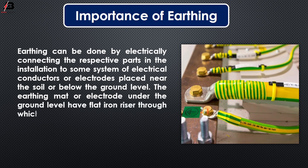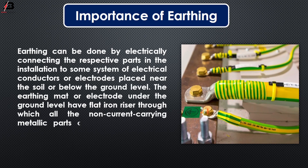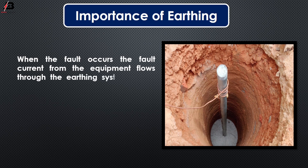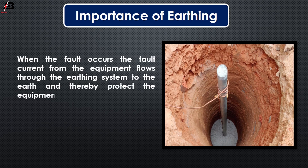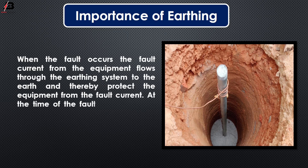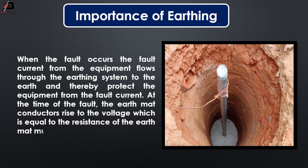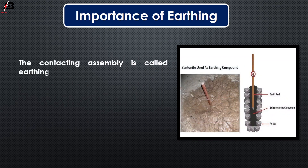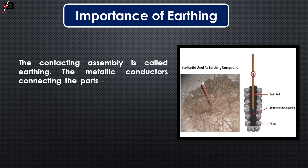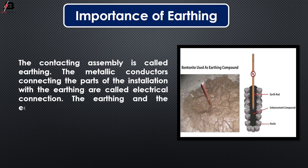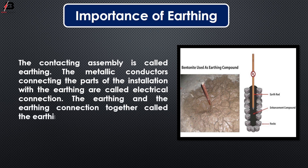Flat iron rays through which all the non-current carrying metallic parts of the equipment are connected. When a fault occurs, the fault current from the equipment flows through the earthing system to the earth, thereby protecting the equipment from the fault current. At the time of fault, the earth mat conductor rises to a voltage equal to the resistance of the earth mat multiplied by the grounding fault current. The contacting assembly is called earthing. The metallic conductors connecting the parts of the installation with the earthing are called electrical connections. The earthing and the earthing connection together are called the earthing system.